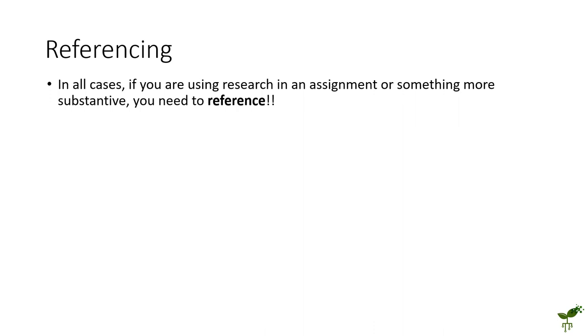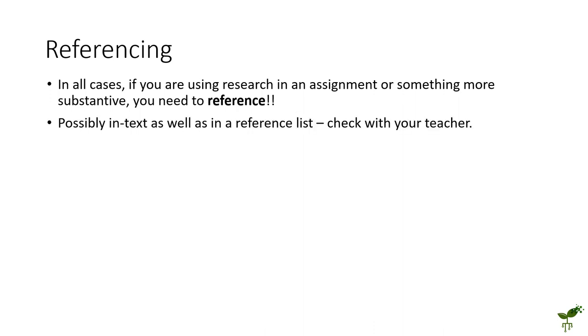Irrespective of how you use your research in your writing, you will need to acknowledge your sources. This normally involves doing some sort of referencing — either in-text referencing, a reference list, or probably a combination of both. The best thing to do is check with your teacher or instructor to see what is required. In-text referencing is basically a citation placed into the sentence to show where some of that information has been obtained from, and there is often a corresponding full reference in the reference list that gives more detail.